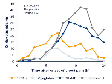A biomarker can also be a substance whose detection indicates a particular disease state — for example, the presence of an antibody may indicate an infection. More specifically, a biomarker indicates a change in expression or state of a protein that correlates with the risk or progression of a disease, or with the susceptibility of the disease to a given treatment.